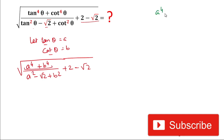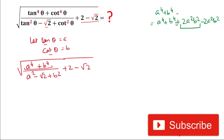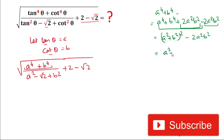For the solution, we'll first work on a⁴ + b⁴. This value can be written as a⁴ + b⁴ + 2a²b² − 2a²b². We add and subtract 2a²b² so the value remains the same. Now, looking at the first three terms, they are in the form of (a² + b²)², so we get (a² + b²)² minus 2a²b².